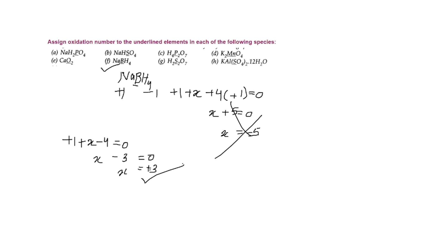Now you have two more elements remaining: one is H₂Cr₂O₇ and the other is Al₂(SO₄)₃·12H₂O. You need to calculate the oxidation state for these two compounds just like we did for the previous six questions. I hope you understood how we calculate oxidation states.